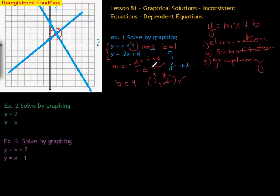Now, the negative thing about doing it this method is — see how nicely this intersected right where the grid lines crossed? That doesn't always happen. If your lines would intersect at a non-grid point, it would be really hard to tell what that point is exactly. That's why this isn't the best method, but it shows what's actually happening.